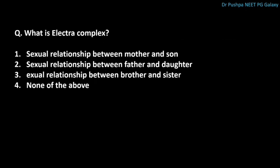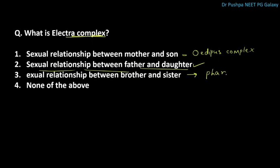What is the Electra complex? The correct answer is a sexual relationship between father and daughter. If between mother and son, it is called the Oedipus complex. If between brother and sister, it is called the pharaon complex. These are types of incest — incest means sexual relationship with close relatives.